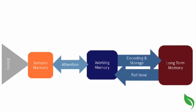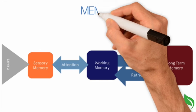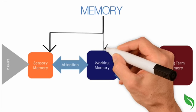This model provides a helpful framework for thinking about how memory works. Memory can be thought of as having three critical components.